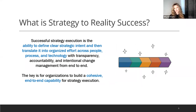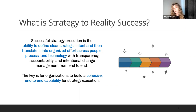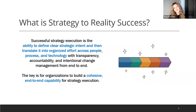I wrote a book called 'Strategy to Reality,' and turning big ideas into action is a big area of passion for me. What does it really mean to successfully go from strategy to execution? I think about it as two things: first, defining clear strategic intent — that's what we're translating and building upon — and second, being able to translate that intent into organized effort across people, process, and technology, potentially at very large scale across different organizational structures, legal entities, products, and geographies, with transparency and accountability.